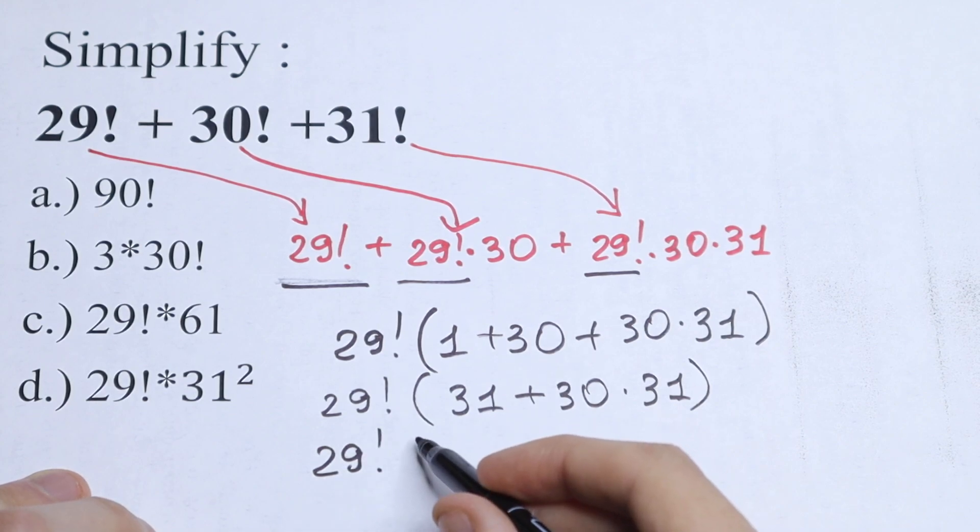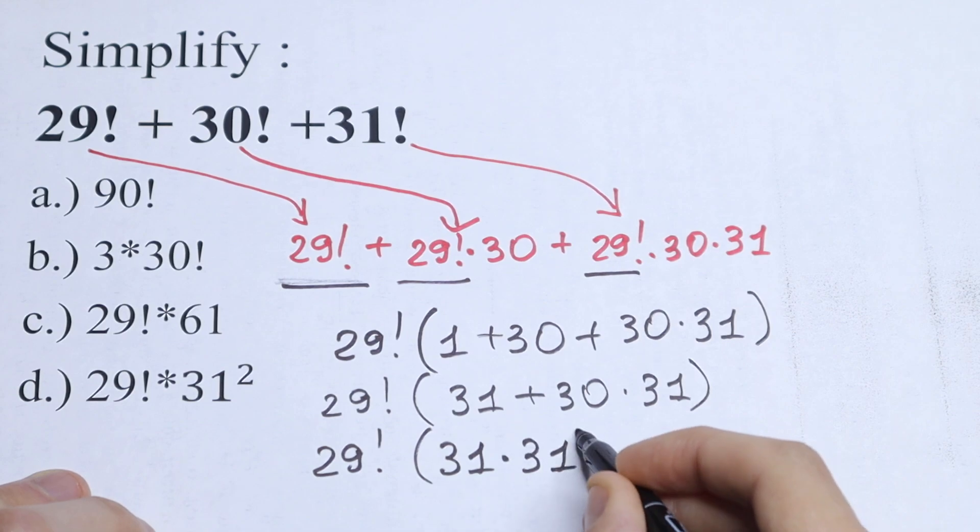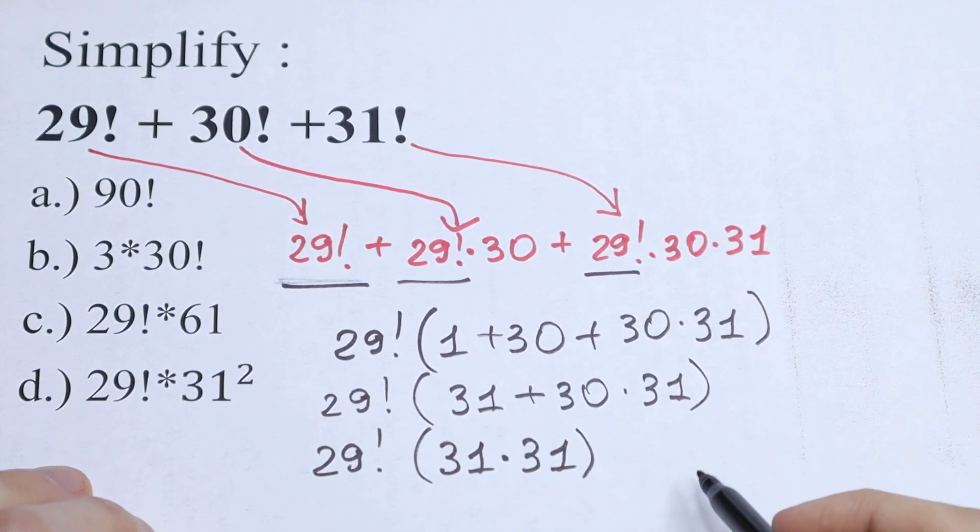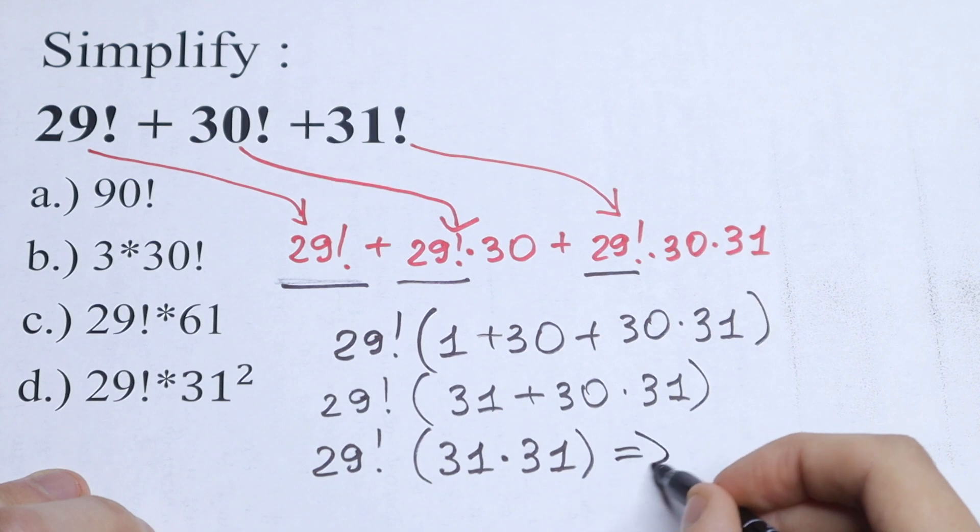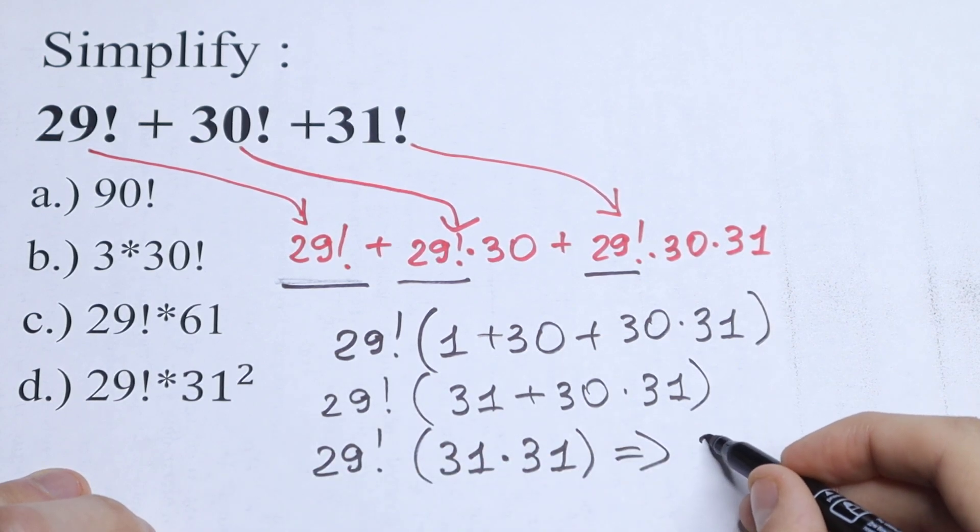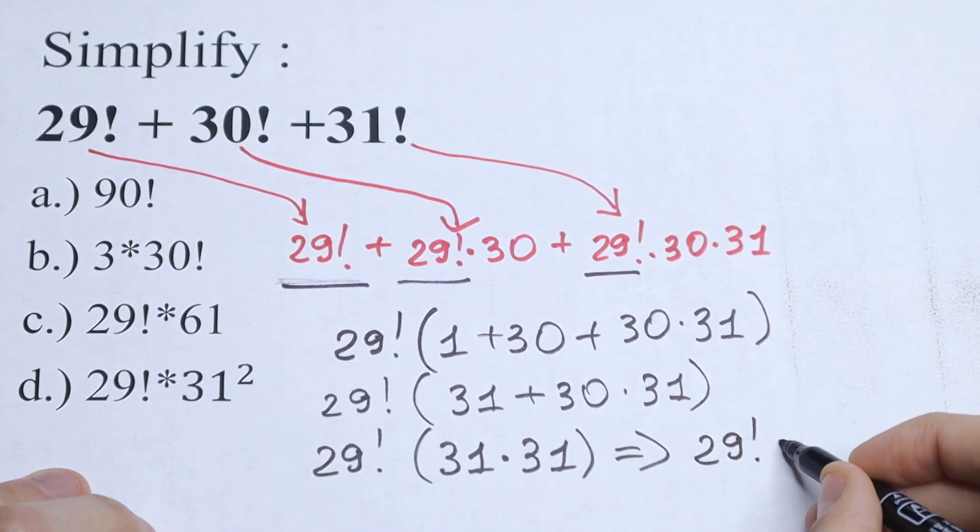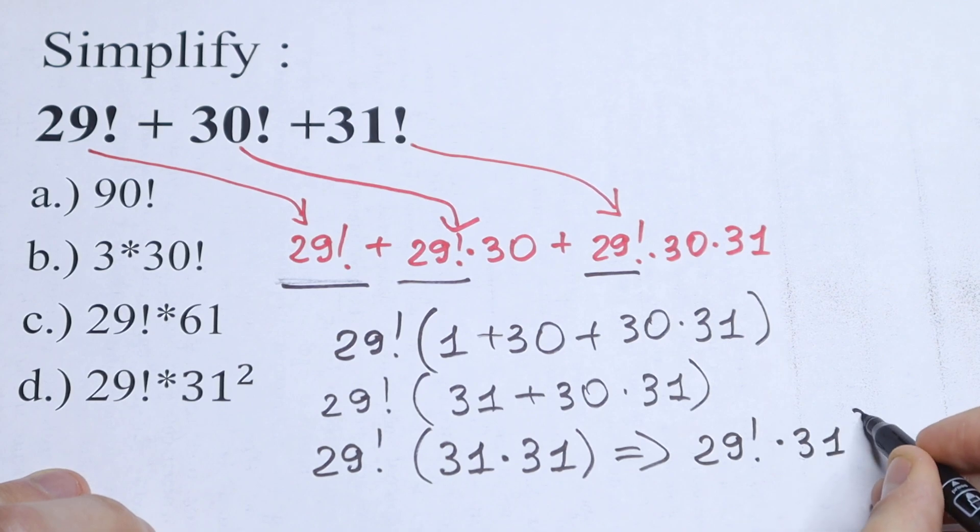29 factorial, and in parentheses we will have 31 times 31. And if we write this 31 times 31 using the square sign, we will have 29 factorial times 31 squared. And this is our answer.